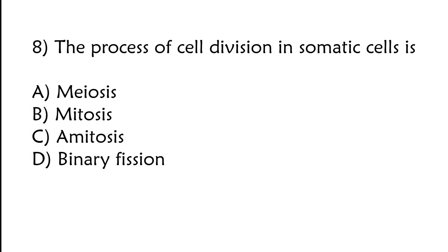The process of cell division in somatic cells is: meiosis, mitosis, amitosis, or binary fission. The correct answer is option B, mitosis.